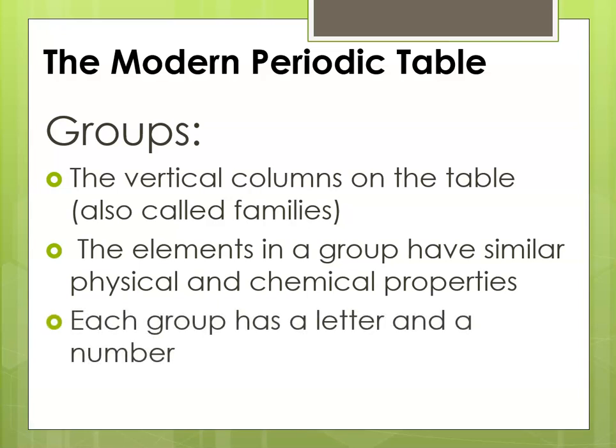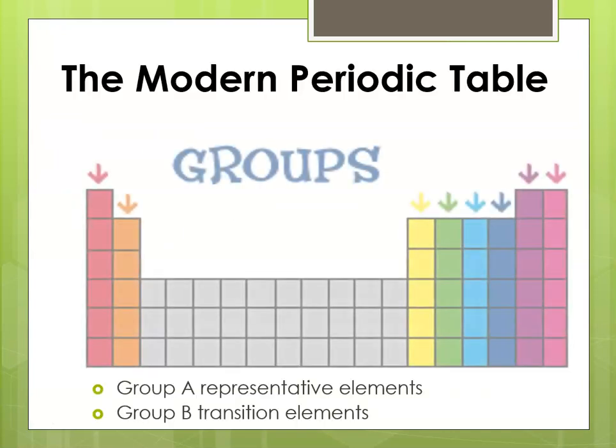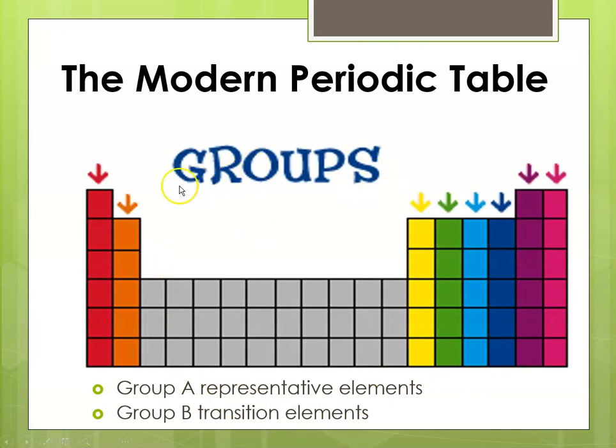Each group has a letter and a number like 1A, 2A, 3A. Here is the illustration showing the groups, which are these vertical columns. The ones that are in pretty colors are the so-called representative elements or the A elements. The ones here in gray are the B elements, which would be your transitions. And the ones at the bottom that are not shown on this slide would be your inner transitions.